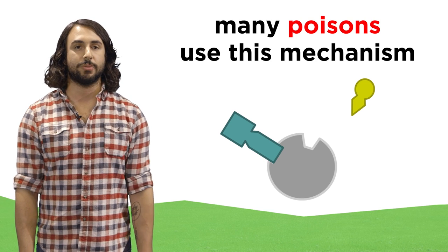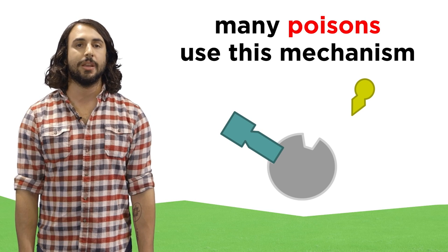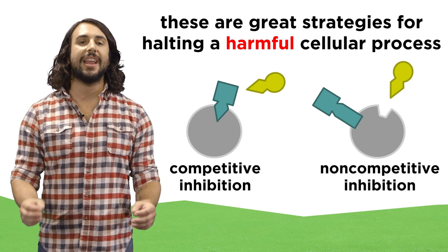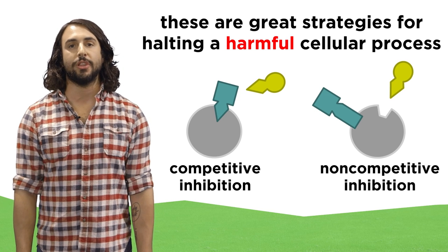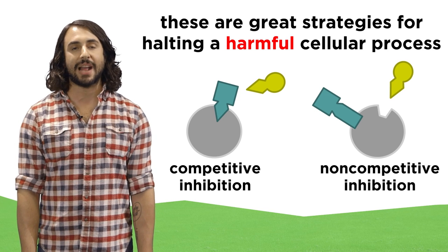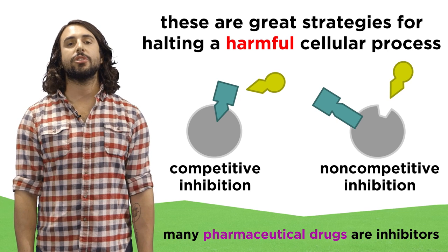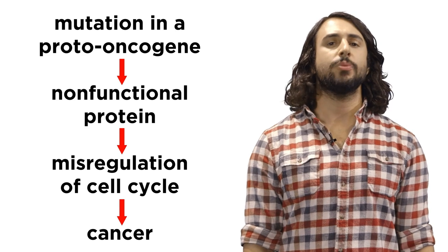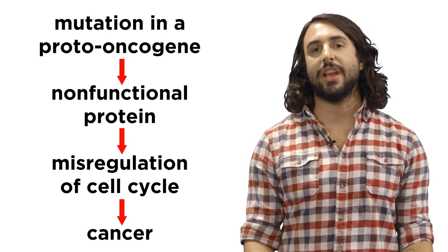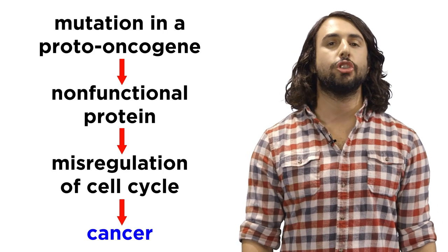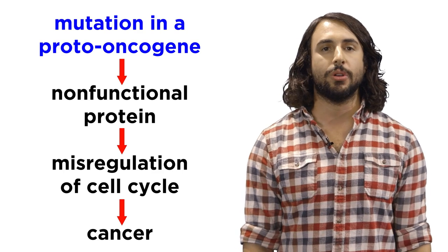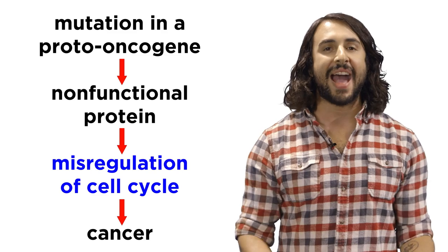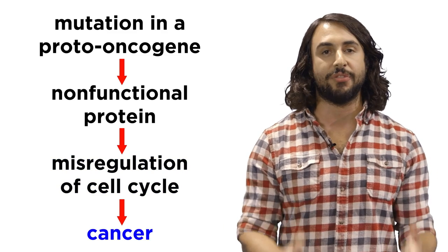Many poisons work this way and are dangerous because of the important cellular processes they inhibit. But when an irregular cellular process is doing harm to the organism, an inhibitor can stop this activity. Inhibitors are therefore a huge part of the pharmaceutical industry. We have to recognize that if a disease, such as some form of cancer, is the direct result of a genetic mutation and results in either a misbehaving or non-functional protein, then that is the fundamental cause of the disease.